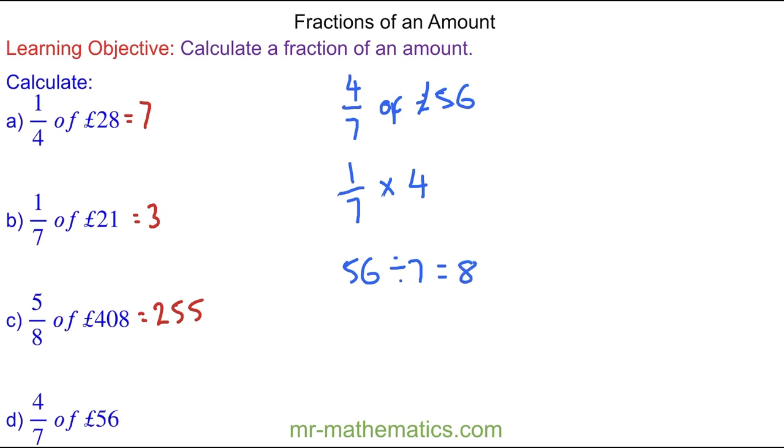And then to work out four sevenths, we're going to multiply this by four, which is 32. So four sevenths of 56 pounds is 32 pounds.